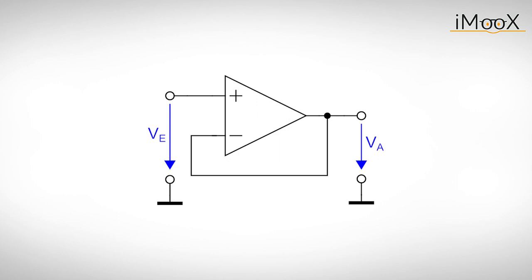Another circuit you might want to use from time to time is the voltage follower. As you can see, it's just an operational amplifier with its inverting input connected to the output. We again apply the rule that VD is zero volts. This lets us determine the output voltage VA to be equal to the input voltage VE.